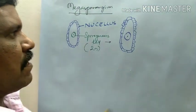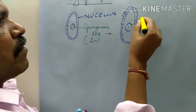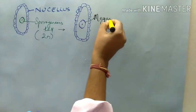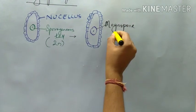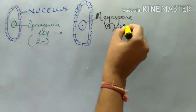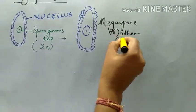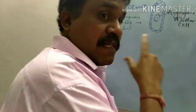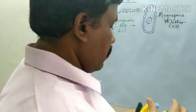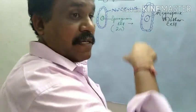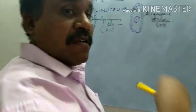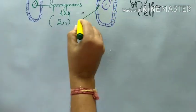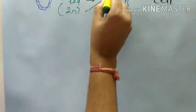There are a lot of divisions and they form the Megaspore mother cell. What kind of division is that? It is mitosis. So naturally when it is mitosis, the ploidy will be 2N. It will also be 2N, this also will be 2N.